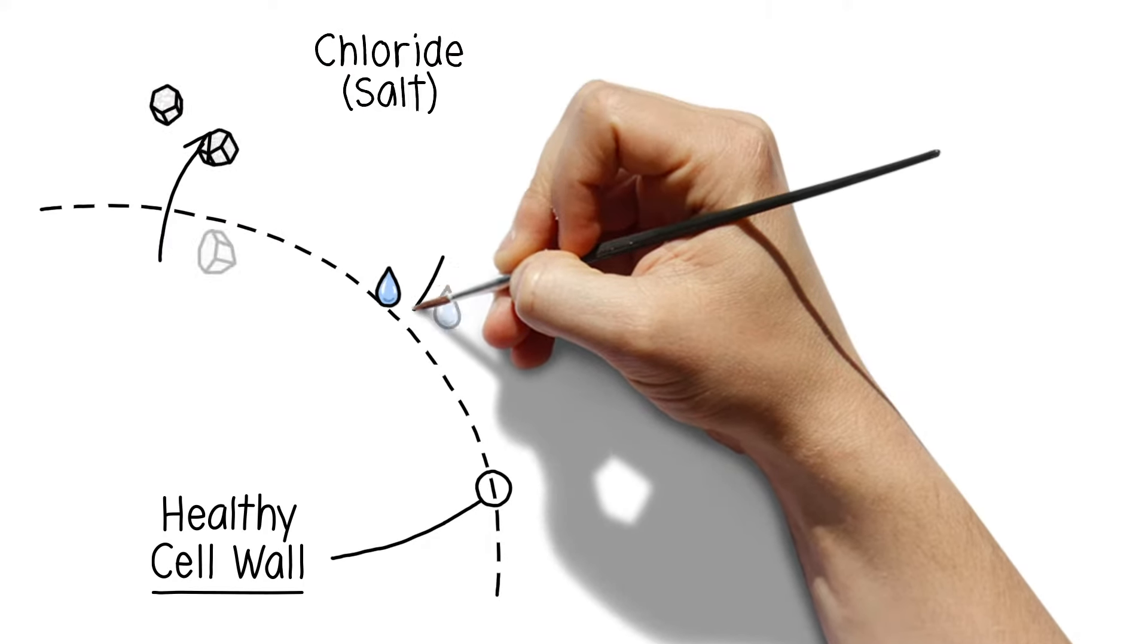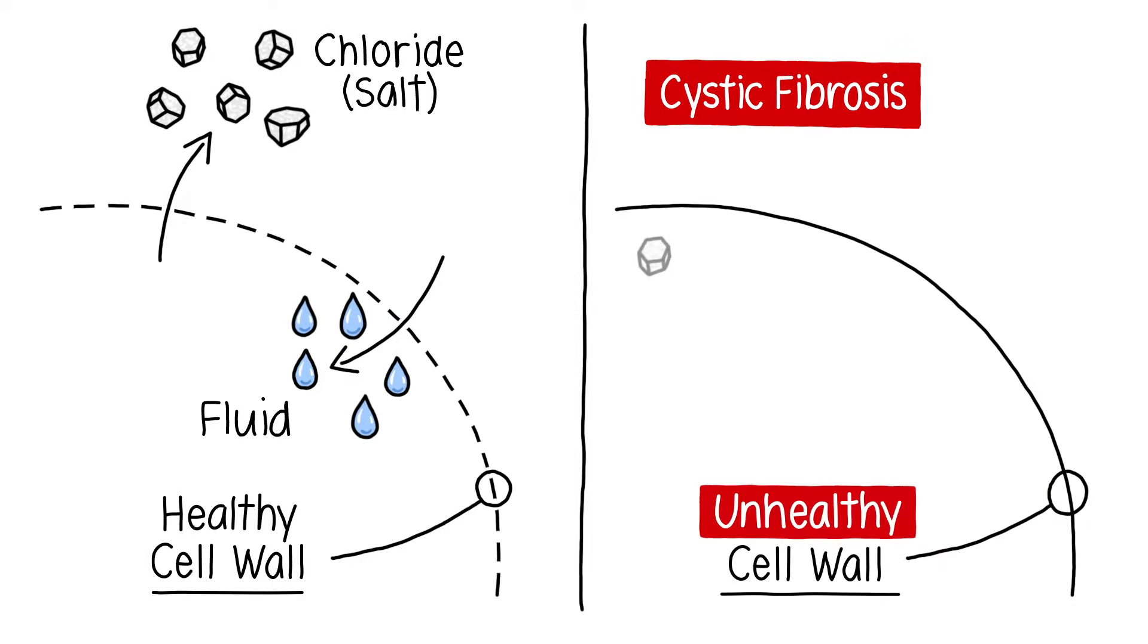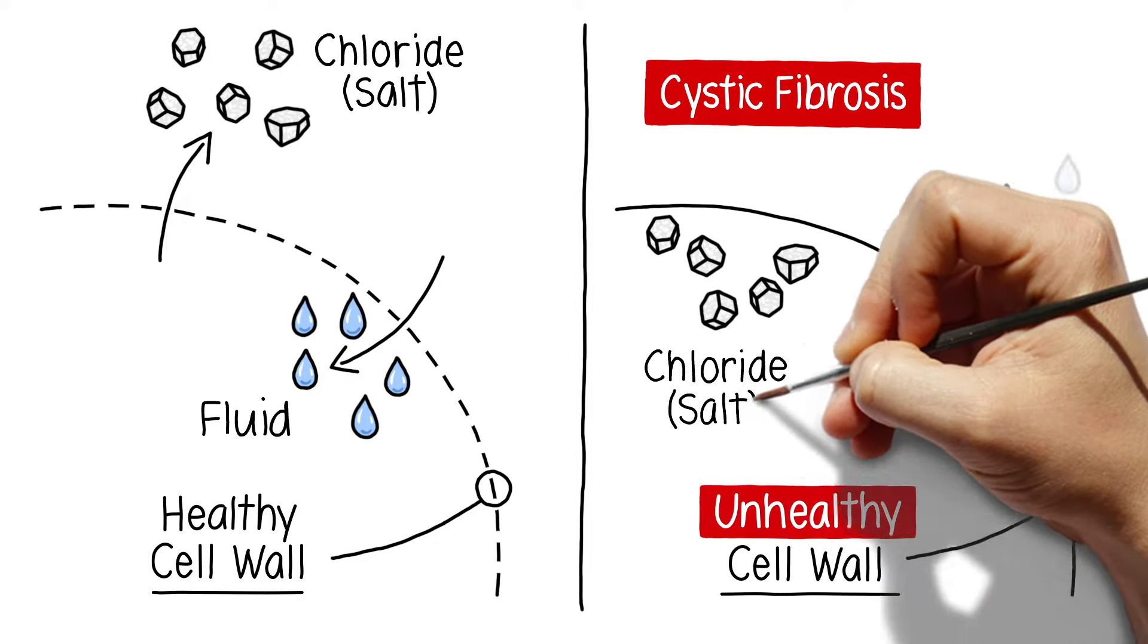Cystic fibrosis, also called CF, is an inherited disease that disrupts the flow of salt and fluids in and out of cells in the body.